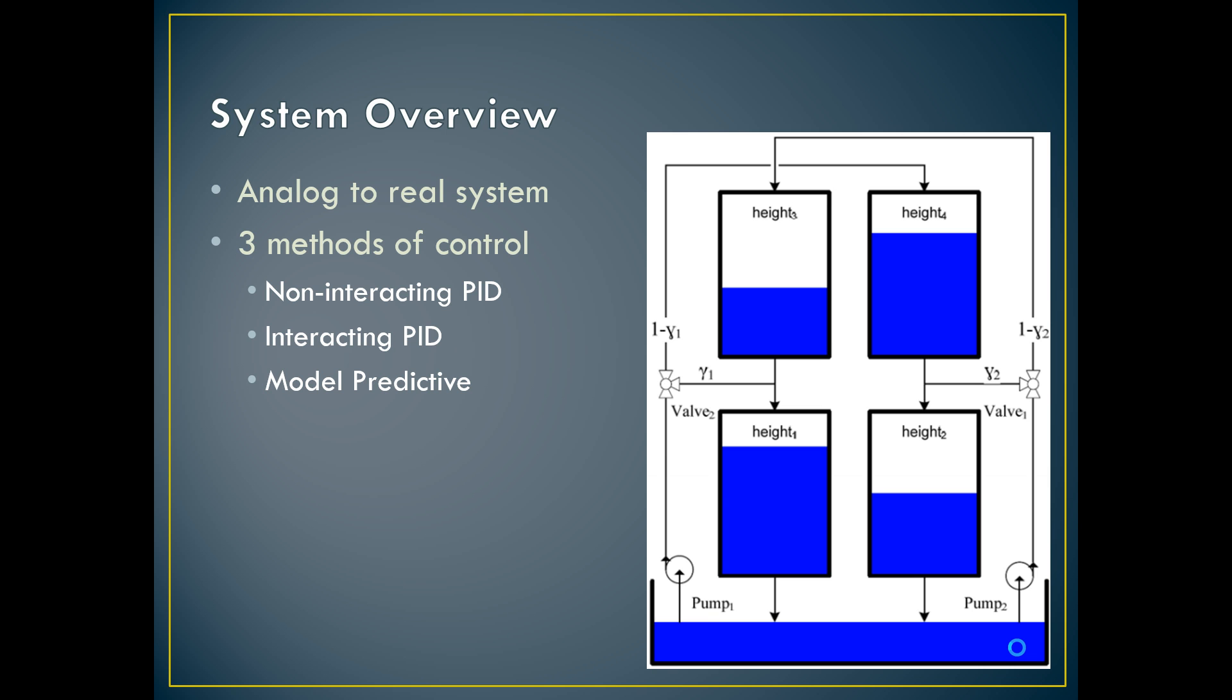There's a gamma valve in the middle that if you change that valve it'll bypass those upper systems and control the lower tanks. Our task was to control these lower tanks at the set point.